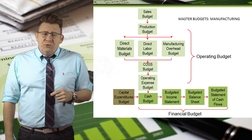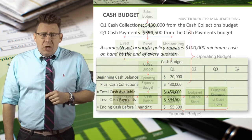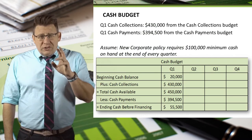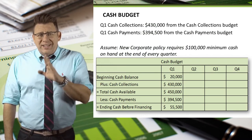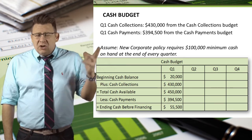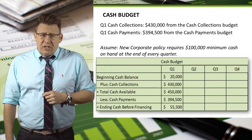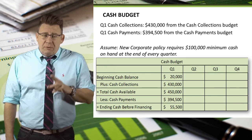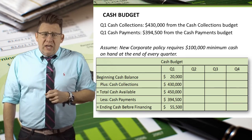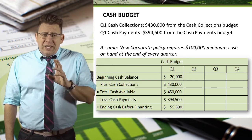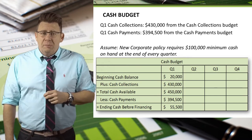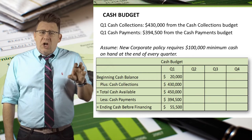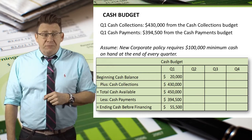We start with our beginning cash balance, which is the prior quarter's ending balance — here assumed to be $20,000. We add Q1 cash collections from the cash collections budget and subtract Q1 cash payments from the cash payments budget. This gives us a subtotal called ending cash balance before financing.